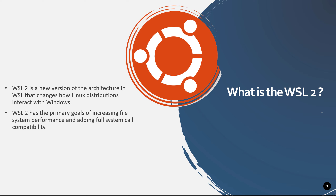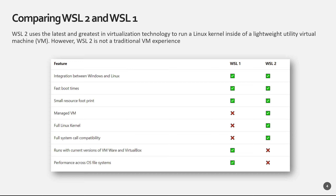Comparing WSL2 versus WSL1: WSL2 uses the latest virtualization technology to run a Linux kernel inside a lightweight utility virtual machine. However, WSL2 is not a traditional VM experience. The major difference is that WSL2 has a managed VM available within the Windows host operating system, and it includes a full Linux kernel baked in — one of the most important changes Microsoft has brought with this release.